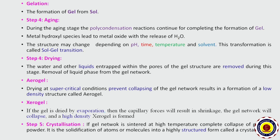Next, drying. During drying, the gel is heated at a specified temperature so that water and other liquids within the pores of the gel structure are removed. Two types are involved in drying: aerogel and xerogel. If drying is performed under supercritical conditions, it prevents collapsing of the gel network, resulting in a low density structure called aerogel. On the other hand, if the gel is dried by evaporation, capillary forces cause shrinkage, the gel network collapses, and a high density xerogel is formed.